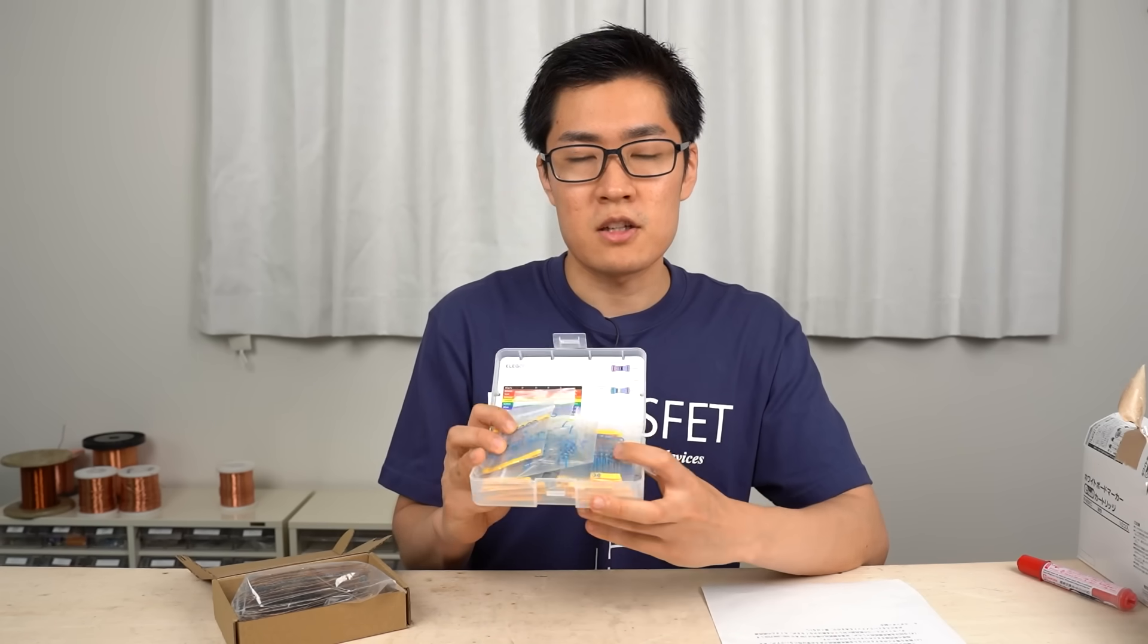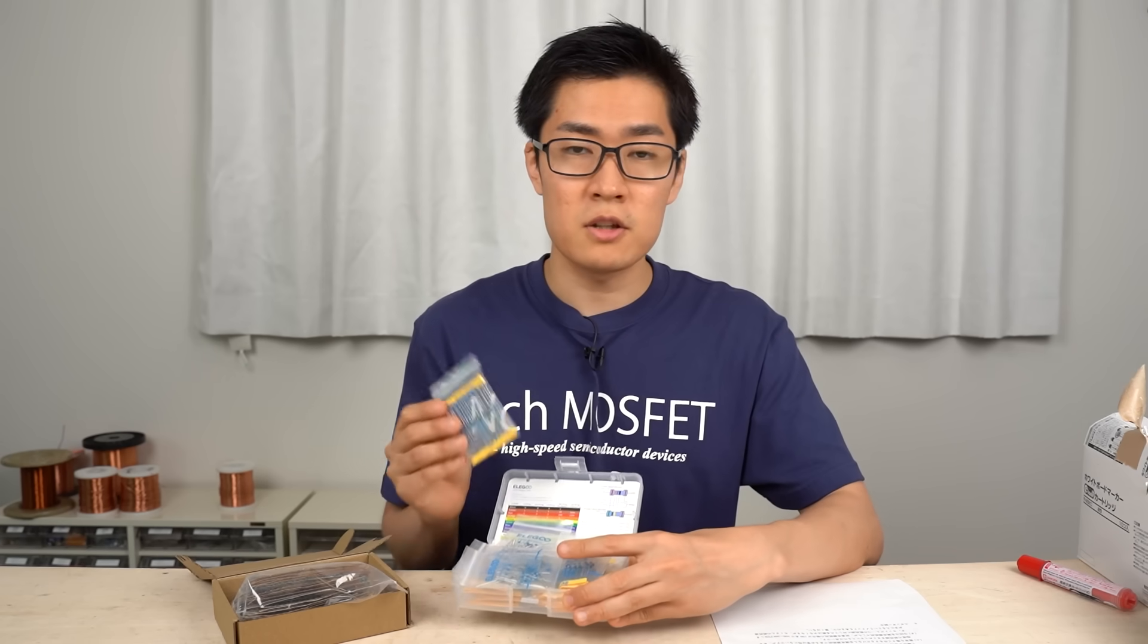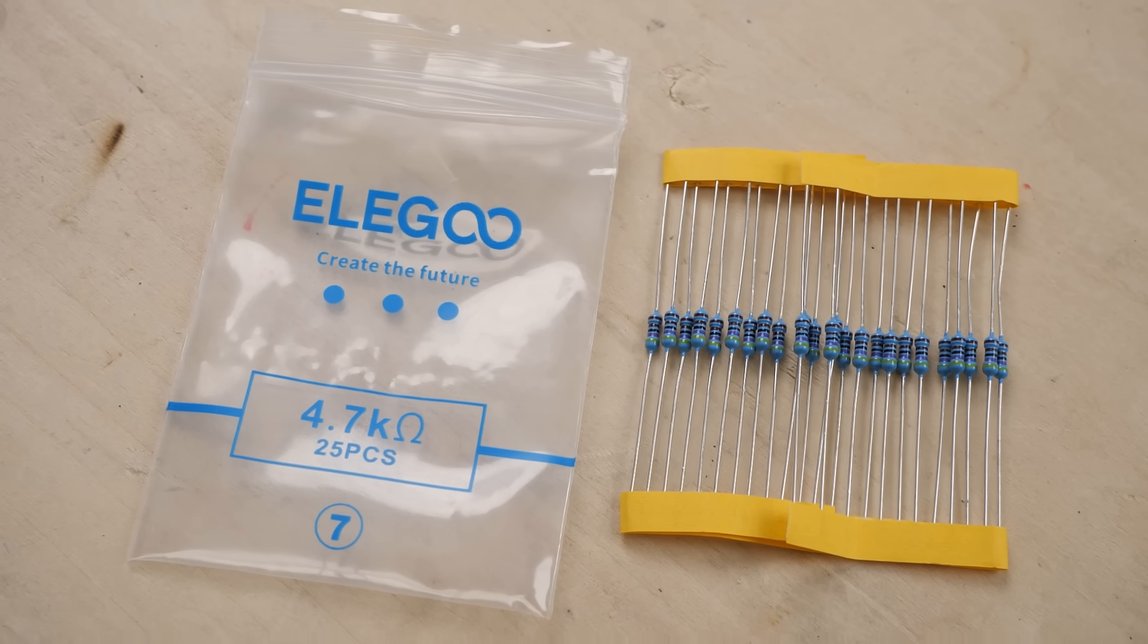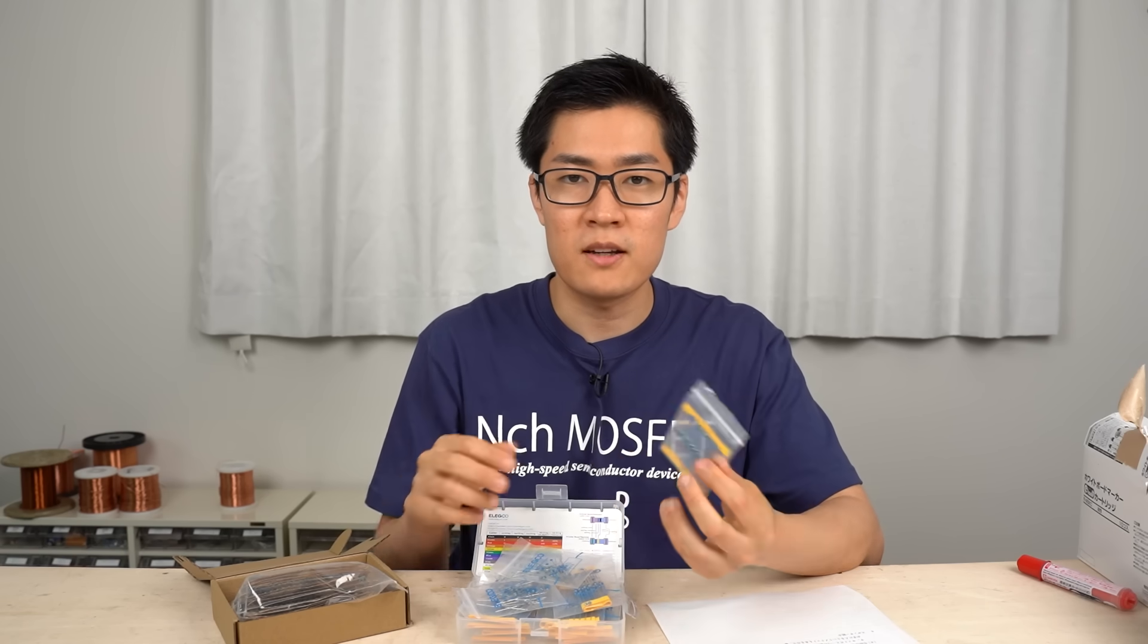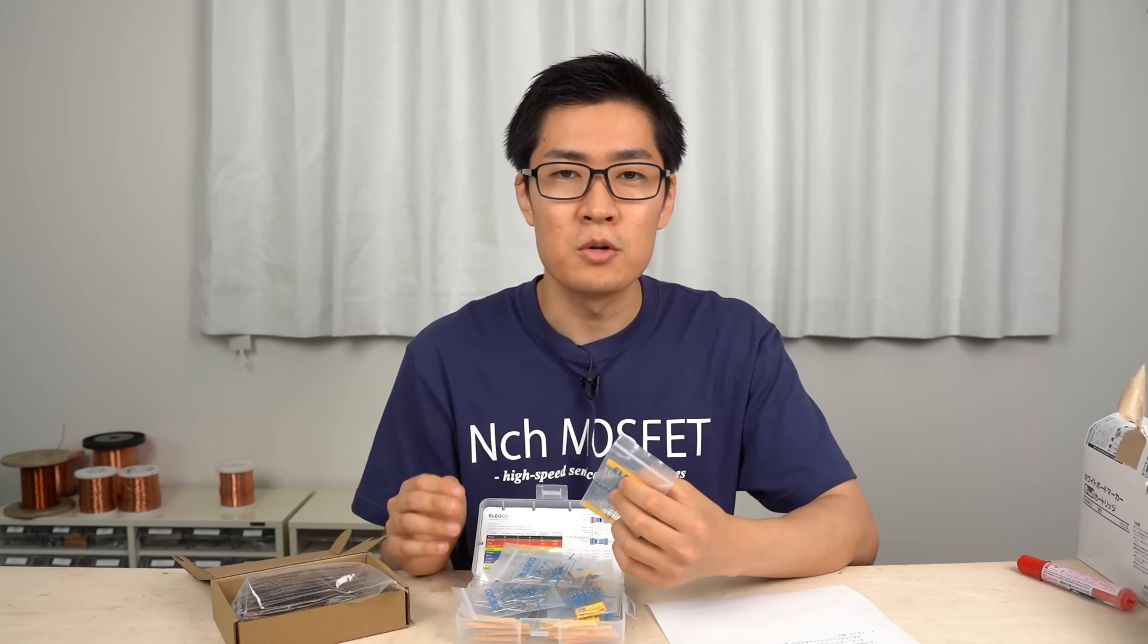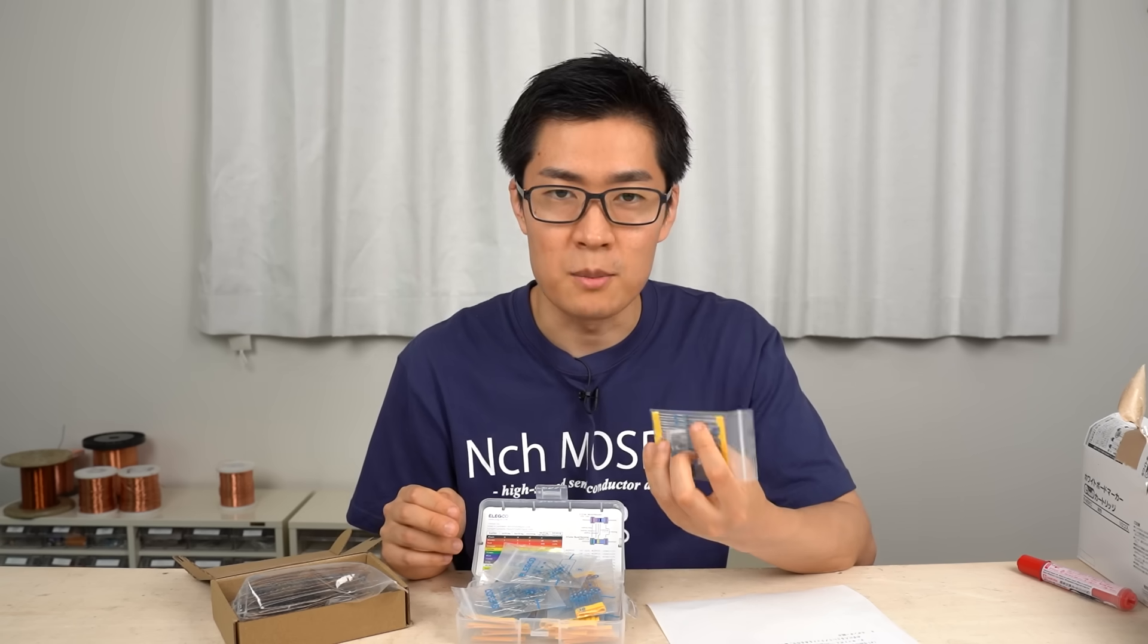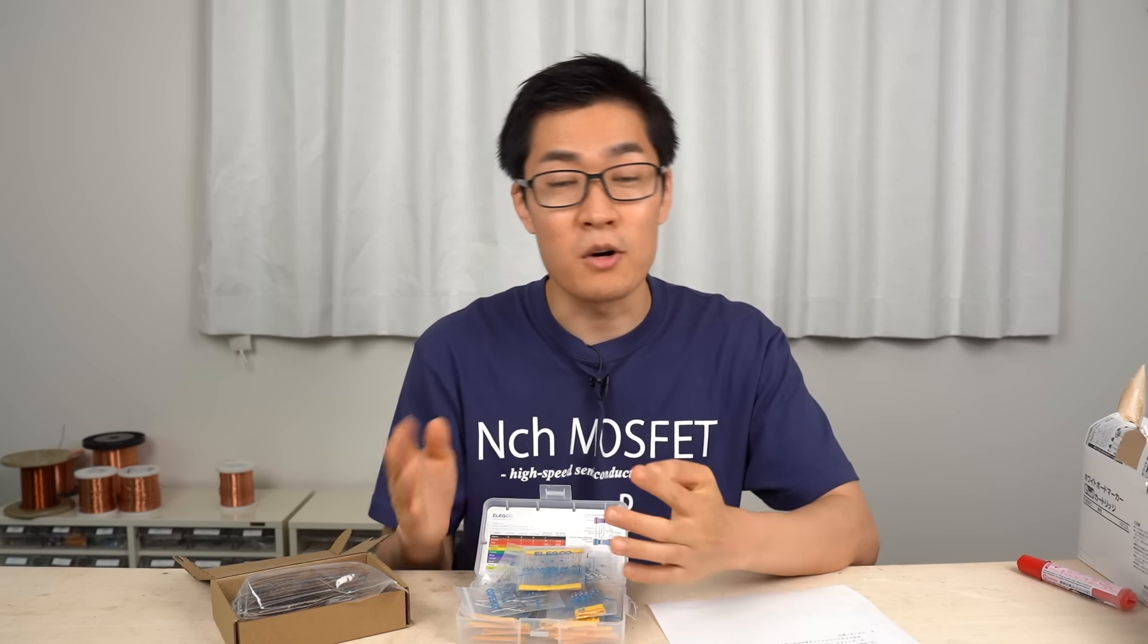As for Elegoo, the error rates are within plus or minus 1%. Also, the lead wires in the packaging are good. Overall, the product is of high quality. Again, the company that manufactured the resistors is more important than the company that sells them. However, buyers don't have any means to tell which company manufactured the resistors or whether they applied quality control measures. I hope this video will be of some help to choose the right product.